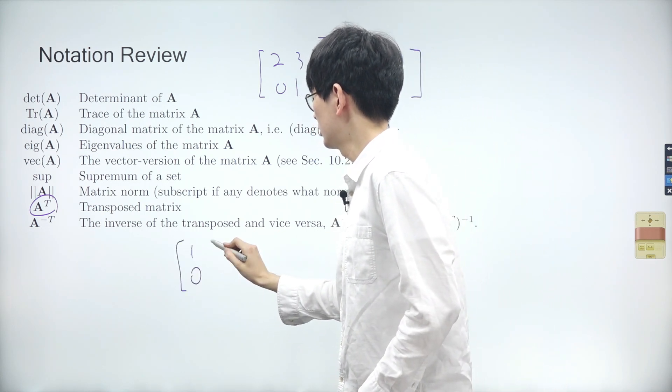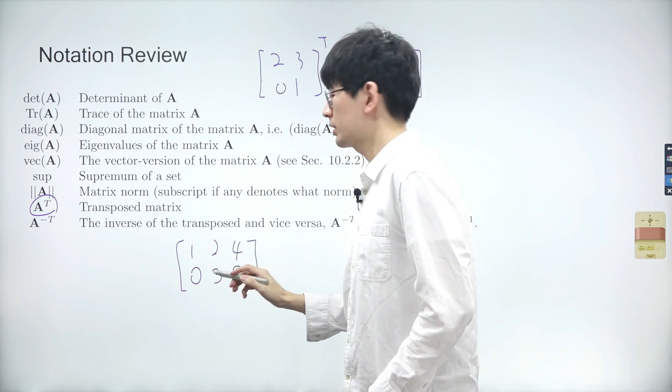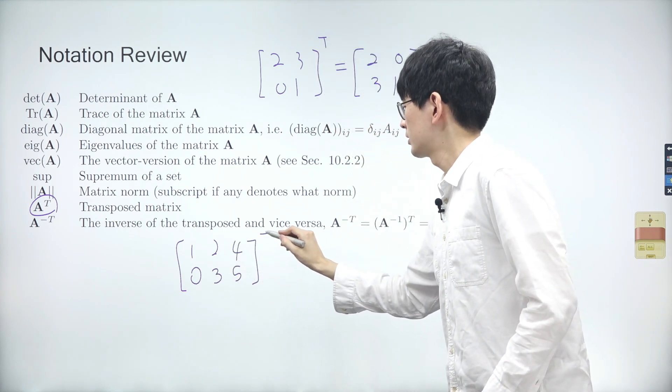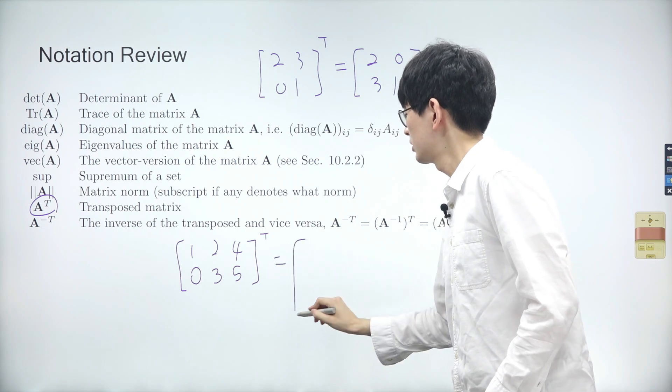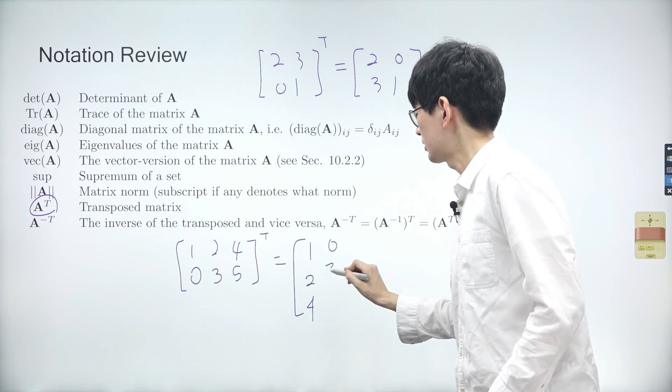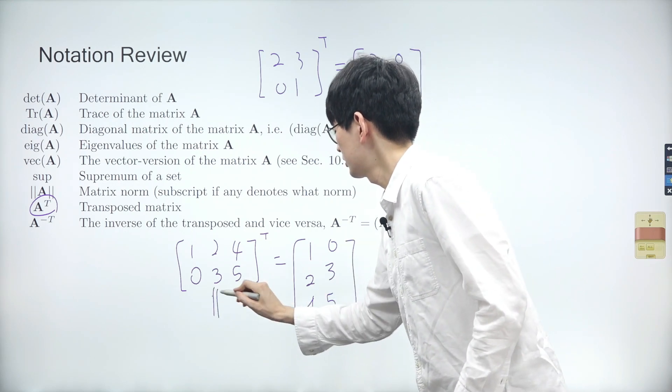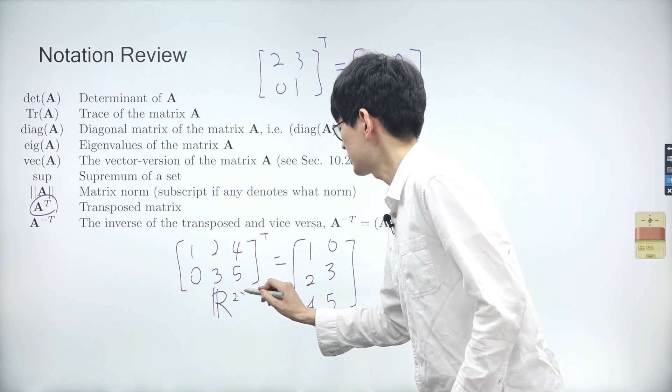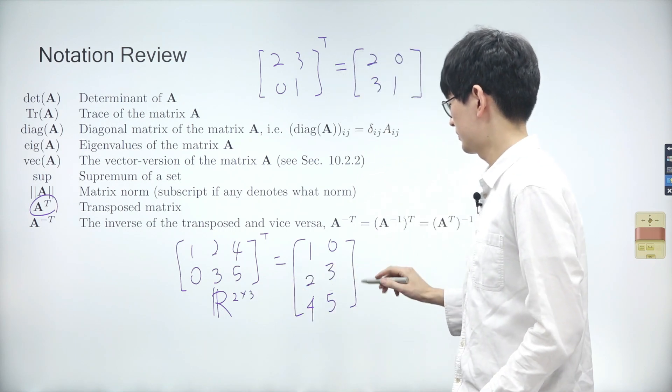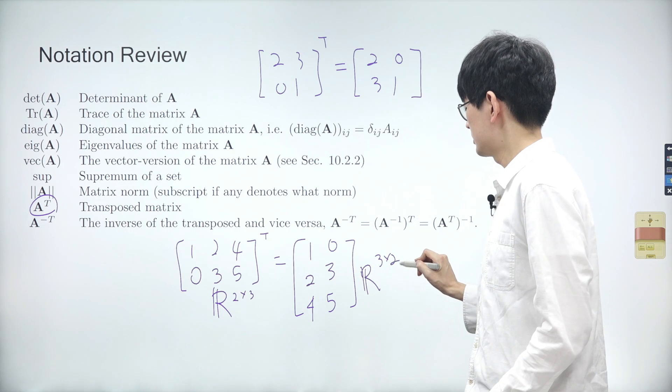When we transpose a matrix that is not square, it will result in a matrix with a different shape. So the first matrix is a 2 by 3 matrix, while the second matrix is a 3 by 2 matrix. In other words, the number of rows and columns are swapped.